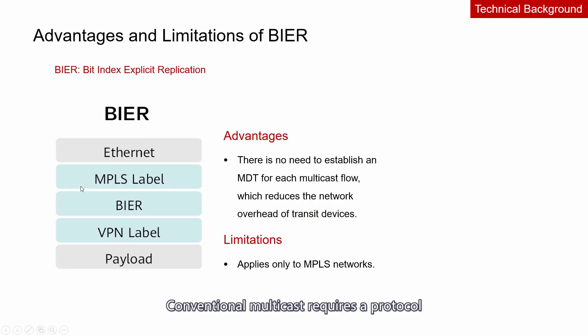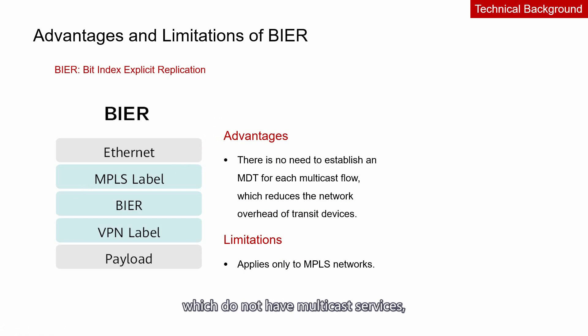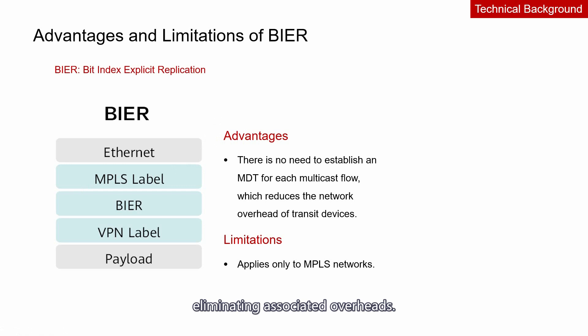Conventional multicast requires a protocol for establishing MDTs, whereas BIER does not. On a network running BIER, transit nodes which do not have multicast services do not need to establish an MDT for each multicast flow, eliminating associated overheads. The BIER technology applies to MPLS networks.